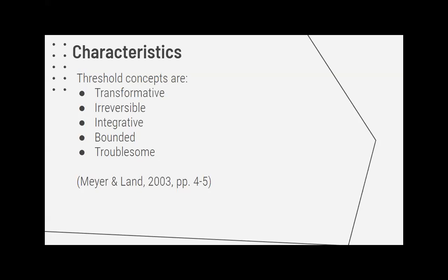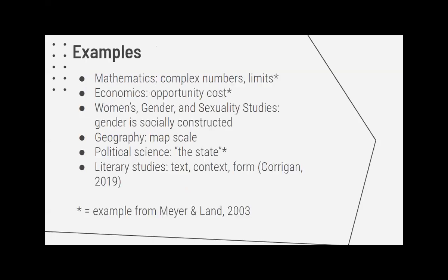Here are a few examples — most of these are from Meyer and Land. In mathematics, threshold concepts often identified are complex numbers and limits in calculus. In economics, an example used a lot is opportunity cost. From my liaison area, women's, gender and sexuality studies — one big threshold concept is the idea that gender is socially constructed. Once you've crossed that threshold it changes the way you see gender, it changes the way you see other categorizations and other binaries.